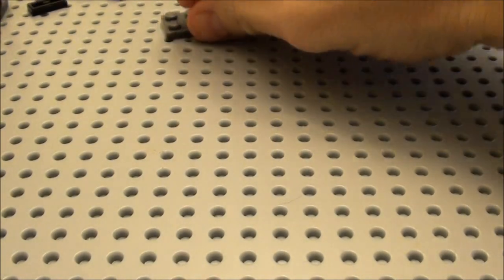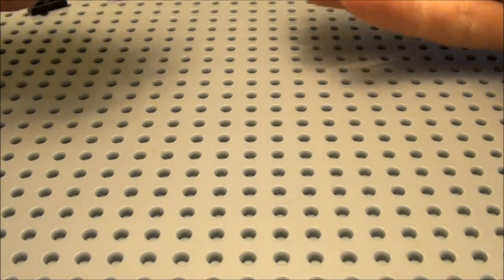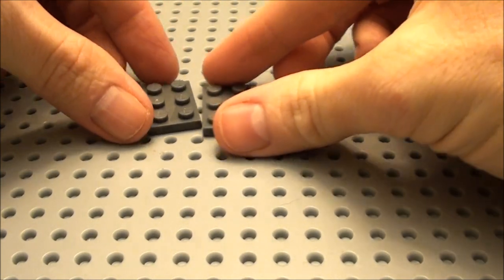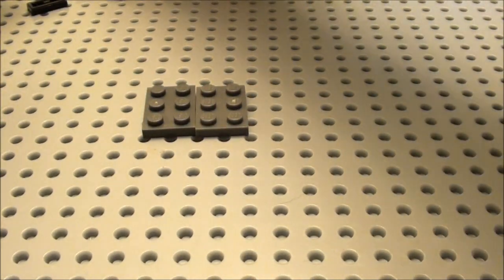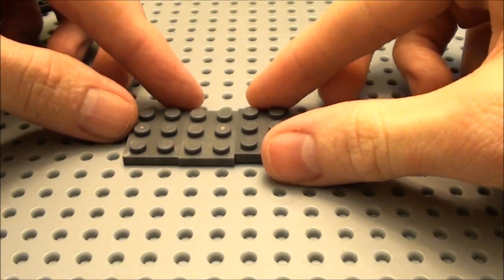The first thing you're going to need to build your grill, you're going to need three of these 2 by 3 plates. Set them side by side.